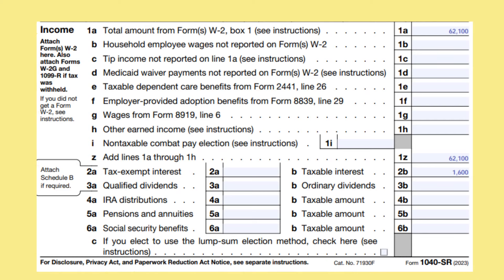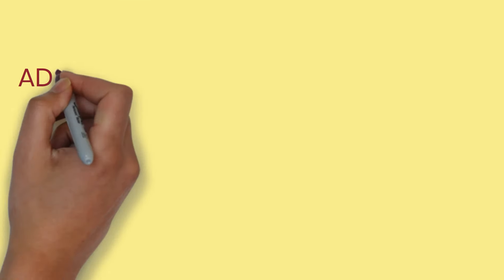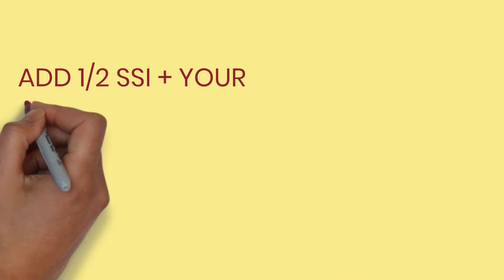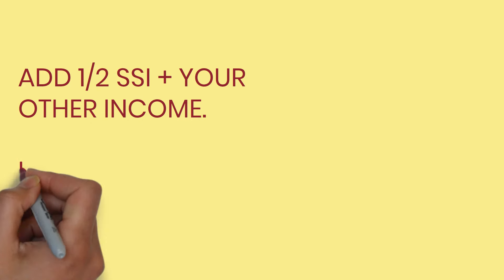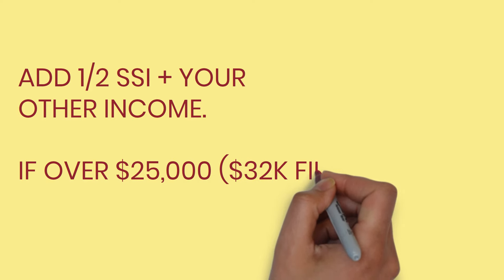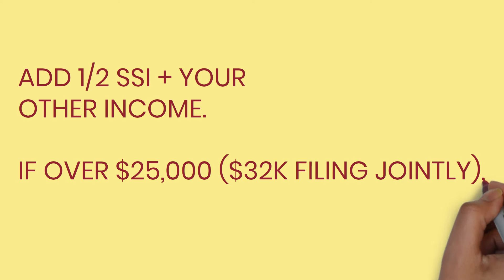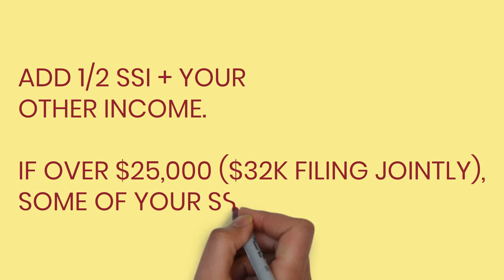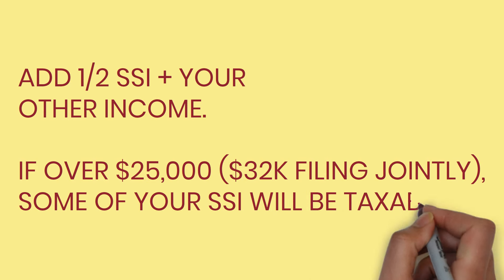On line 6A, put the Social Security benefits that you received from box 5 of SSA Form 1099. On line 6B, put the taxable amount. I have another video to help you determine how much is taxable, and I will put the link at the bottom of this video. A quick summary: take half of your Social Security and add it to all your other income. If this is over $25,000 and you are single, or over $32,000 and you are married filing jointly, then some of your Social Security benefits will be taxable.